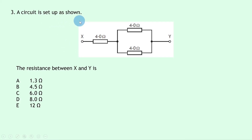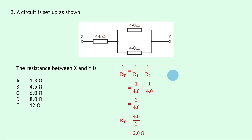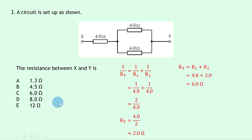Question 3 has a 4 ohm resistor in series with a parallel combination of 4 ohms and 4 ohms, asking for the resistance between X and Y. Let's do the parallel part first using 1/R_T = 1/R1 + 1/R2. Substituting: 1/4.0 + 1/4.0 = 2/4.0, so R_T = 4.0/2 = 2 ohms. Then adding the series 4 ohms: R_T = 4.0 + 2.0 = 6.0 ohms — answer C.